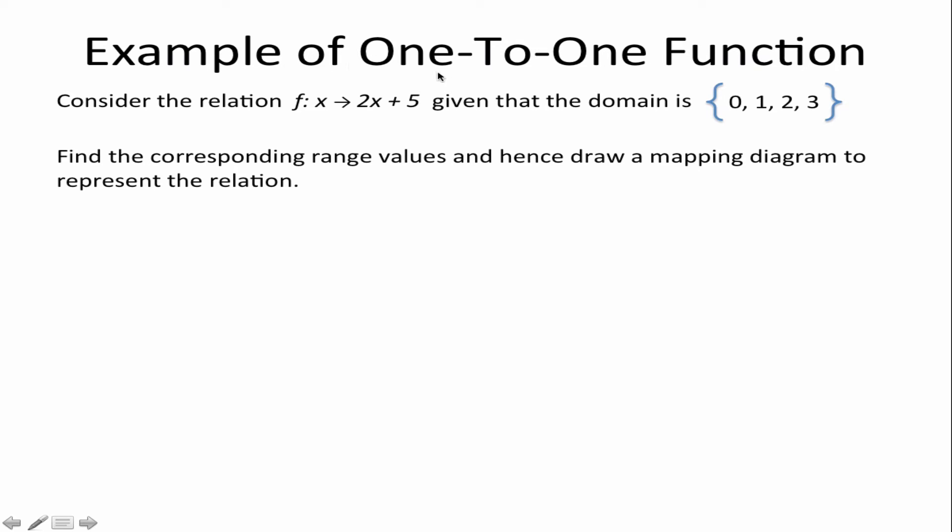Let's give an example. Consider the relation f such that x maps onto 2x plus 5. If you notice this is a different way of writing function notation. Given that the domain is 0, 1, 2 and 3, find the corresponding range values and hence draw a mapping diagram to represent the relation. f of 0 is equal to according to my rule 2 times 0 plus 5 which is equal to 5.